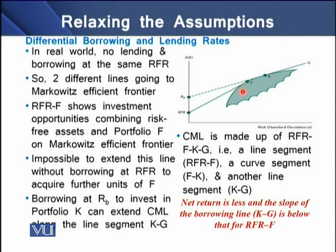The slope of the borrowing line KG is lesser than the slope of RFR-F. So in this case the investor is at a loss, because the net return is reduced as the slope of KG is lower than the slope of RFR-F.